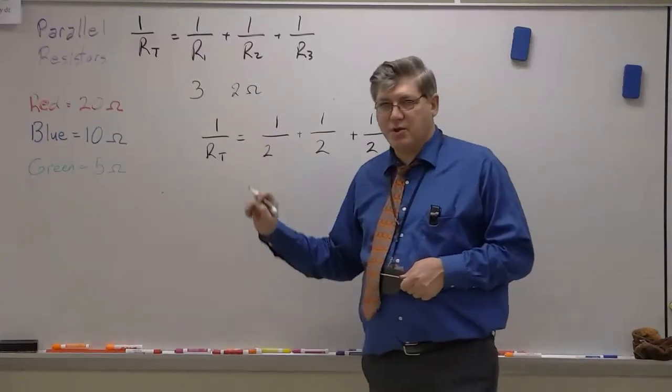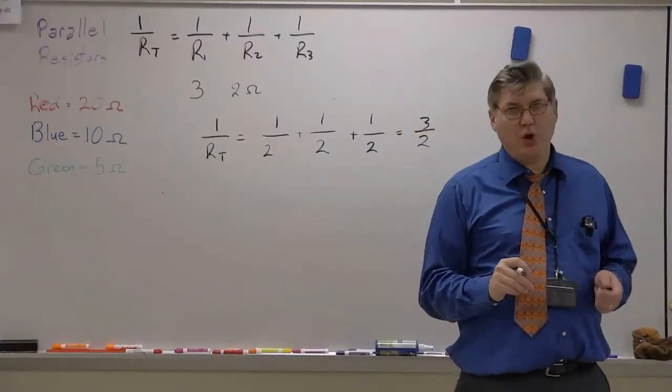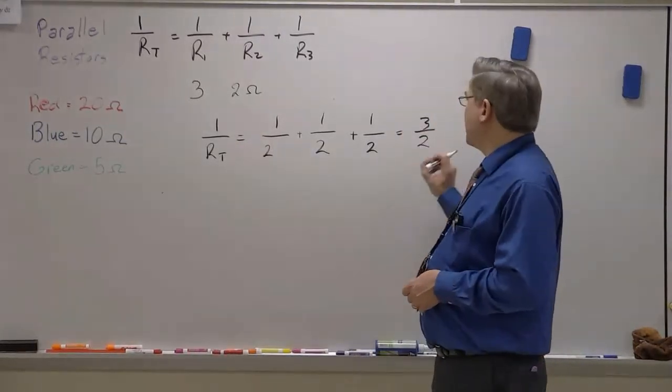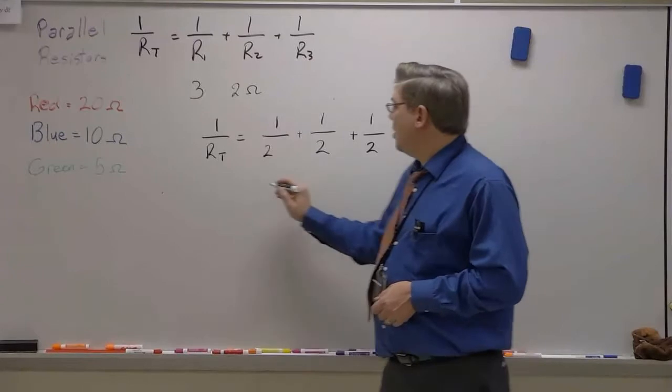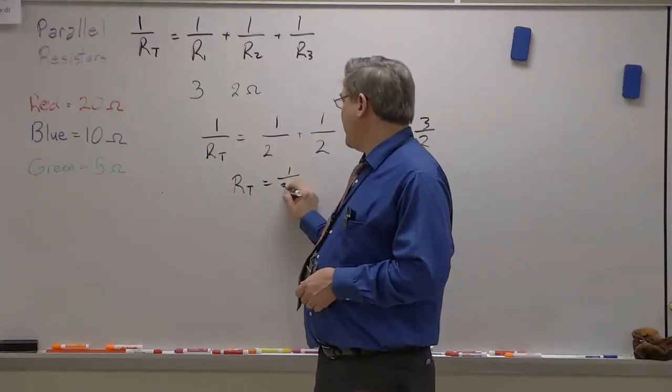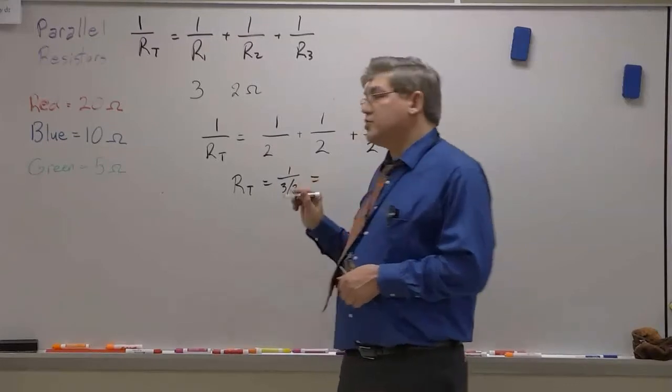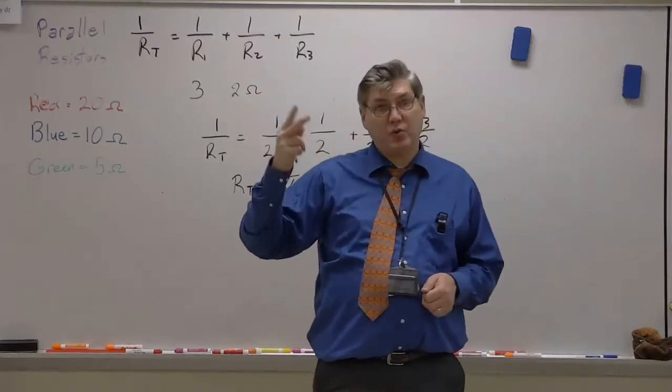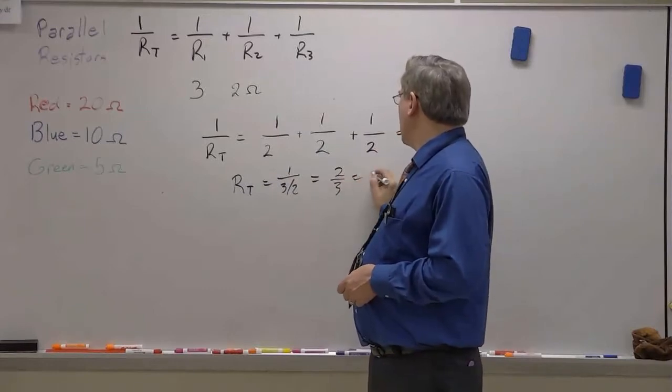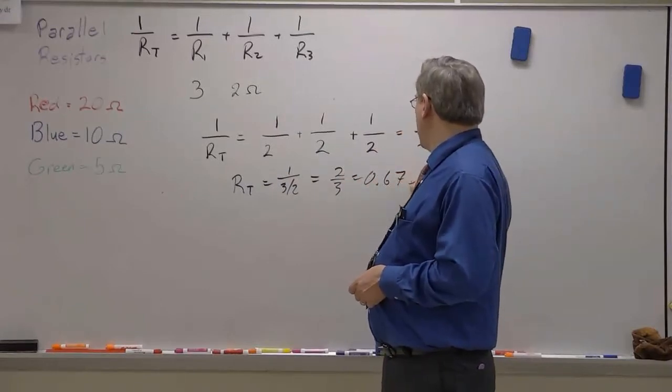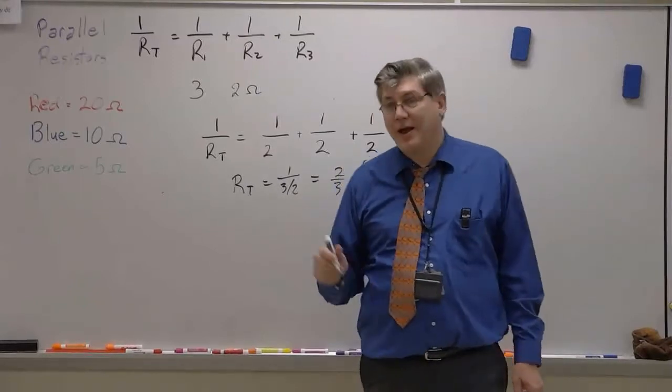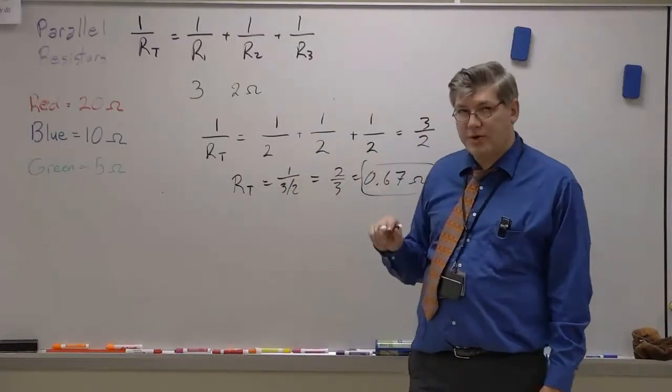But remember that this is the reciprocal. The total resistance is the reciprocal of this number. So RT is equal to 1 divided by 3 halves, which is really simply just 3 halves switched upside down, which is 2 thirds or 0.67 ohms. Notice that the total here is less than any of the individual resistors.